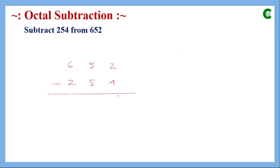For the next subtraction example, starting at the least significant digit, 2 is less than 4 so we borrow from the next position. Adding 8 to 2 gives 10 in this position. Subtracting 4 from 10 gives 6.